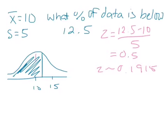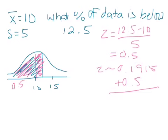From the z-table we got 0.1915, which represents the portion between the mean and 12.5. Since we're above the mean, we still have to add the bottom half, which is 0.5. So 0.1915 plus 0.5 gives a total of 0.6915 — meaning 69.15% of the data is below 12.5.